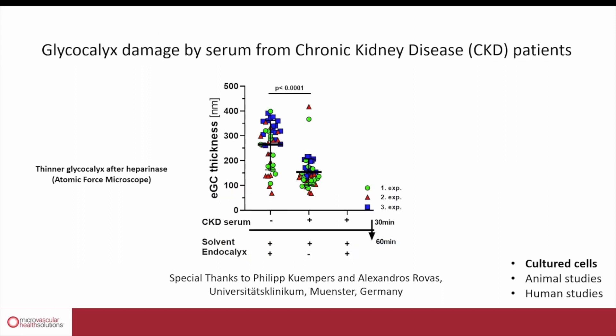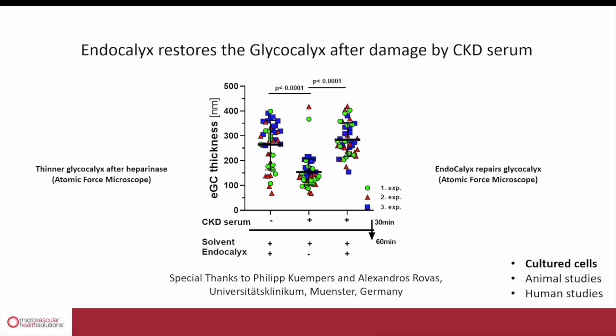Similarly, if you take those cultured endothelial cells and you take blood samples from kidney patients, we find that in the plasma of the kidney patients, there are a lot of toxic stimuli that break down your glycocalyx on your endothelium. But if you pre-treat the endothelium with Endocalyx, even exposing it to the highly toxic plasma from the kidney patients, it doesn't damage your glycocalyx anymore. It really supports the health of your endothelium and protects your glycocalyx against the damage by these toxic stimuli from the kidney patients' plasma.